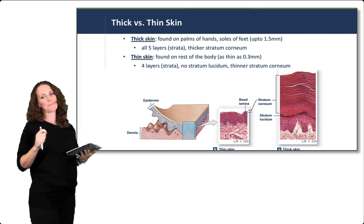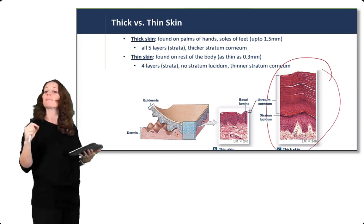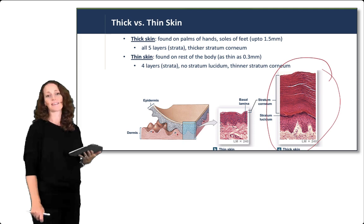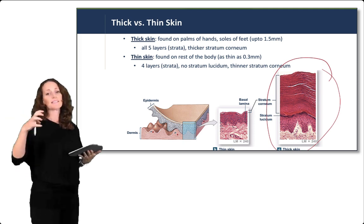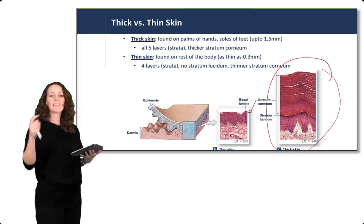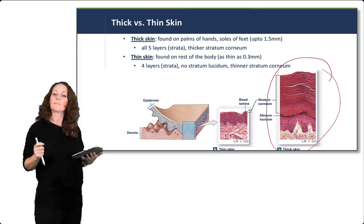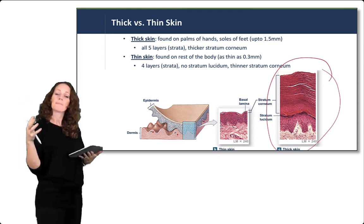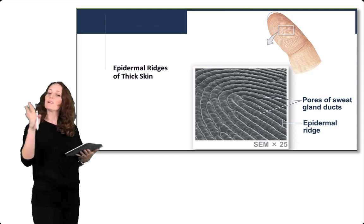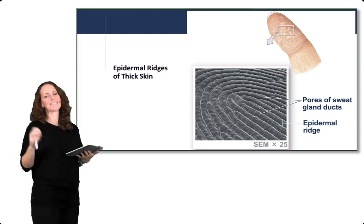Thick skin is determined by how thick the stratum corneum is within the epidermis. Thick skin is found on the palms of the hands and the soles of the feet, and can be up to 1.5 millimeters thick. It has all five layers of the epidermis. Thin skin is found on the rest of the body and can be as thin as 0.3 millimeters — think of how thin the skin over the eyelids is. Thin skin has only four layers because it lacks a stratum lucidum and has a thinner stratum corneum. Interestingly, it is the epidermal ridges of thick skin that create fingerprints, with a unique pattern across individuals.